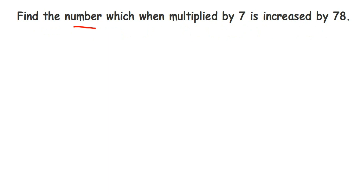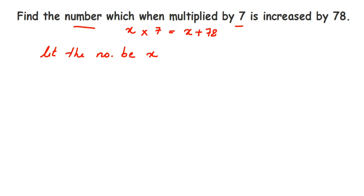So let the number be x. The number x is multiplied by 7, and when you multiply it, it is increased by 78. This means after multiplying, the original number is increased by 78. So x multiplied by 7 gives 7x, which equals the original number increased by 78, that is x plus 78.